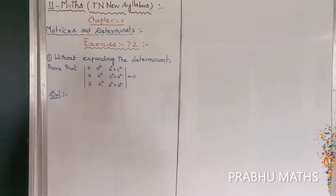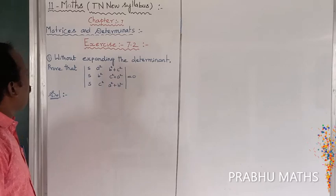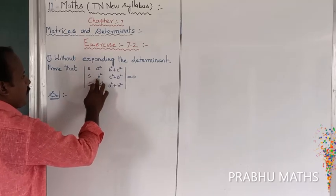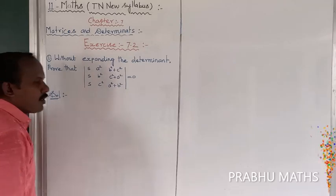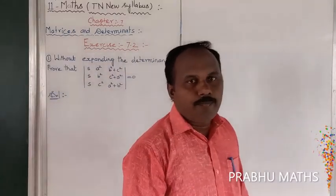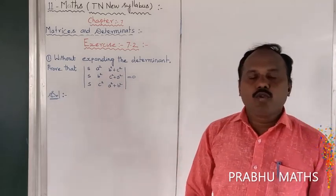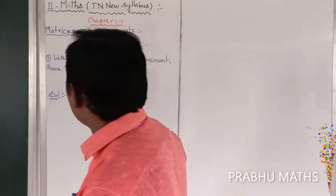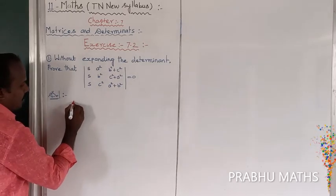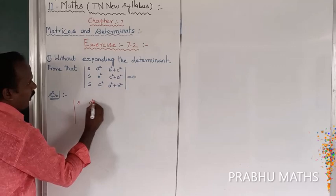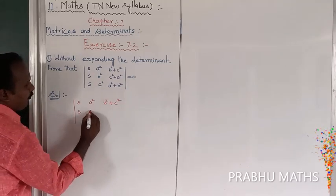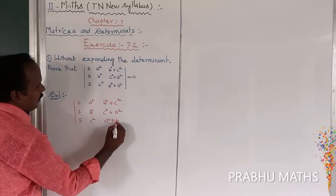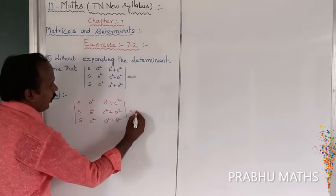First sum: without the x-pattern, we will prove the determinant value equals zero. The given determinant has rows: (S, A², B²+C²), (S, B², C²+A²), (S, C², A²+B²). By using the property of determinants — if any two rows or two columns are identically equal, the determinant is zero — we will show this determinant is going to 0.